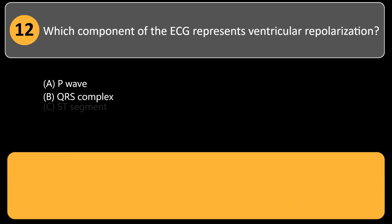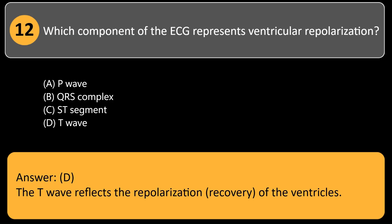Which component of the ECG represents ventricular repolarization? A. P-wave. B. QRS complex. C. ST segment. D. T-wave. Answer: D. The T-wave reflects the repolarization, or recovery, of the ventricles.